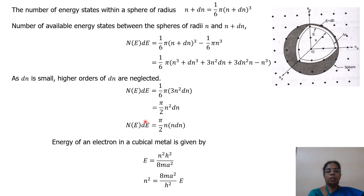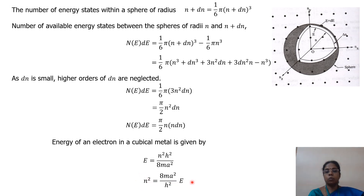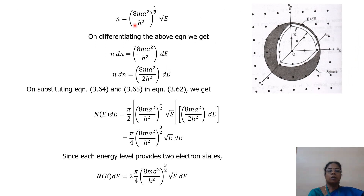So we write N(E)dE as (π/2) × N × N dN. Now we substitute the value for N. The energy of the electron in a cubic metal piece is given by E = N²h² / (8mL²). Solving for N², we get N² = (8mL²/h²) × E. Differentiating, we get the value for N dN. Substituting N and N dN into the equation, we get N(E)dE = (π/4) × (8mL²/h²)^(3/2) × E^(1/2) dE.